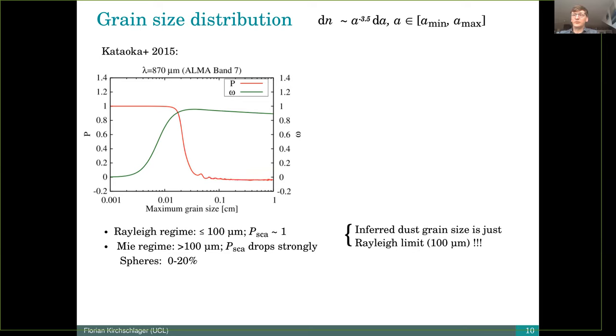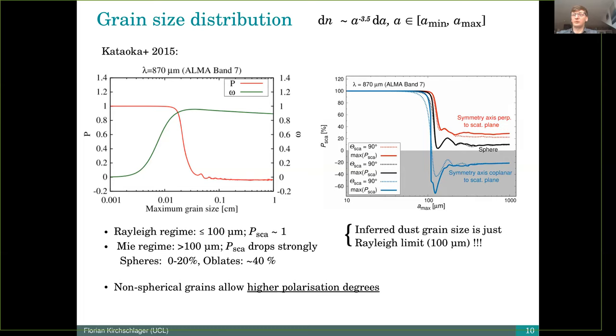When we go to elongated dust grains, the scenario changes, which can be seen here in blue and red curve is the polarization for the elongated dust grains. For grains smaller than 100 micrometer, we see similar behaviors that we have a polarization of around 100%. But then the scattering polarization drops for larger grains, but not as strong as for the spherical grains.